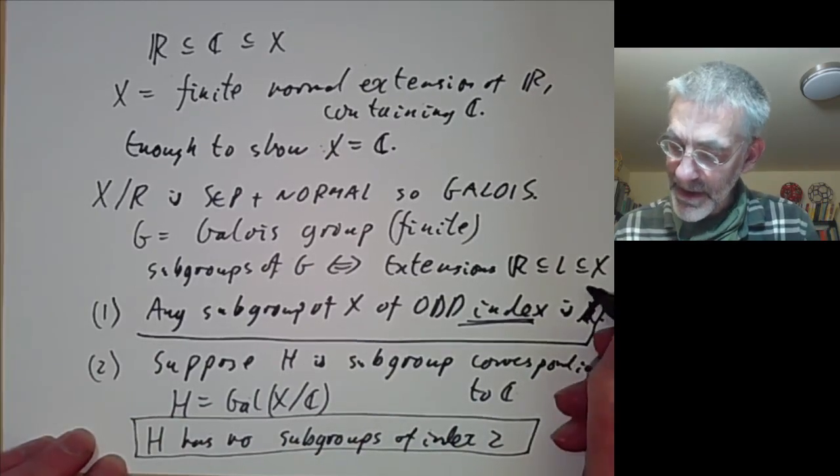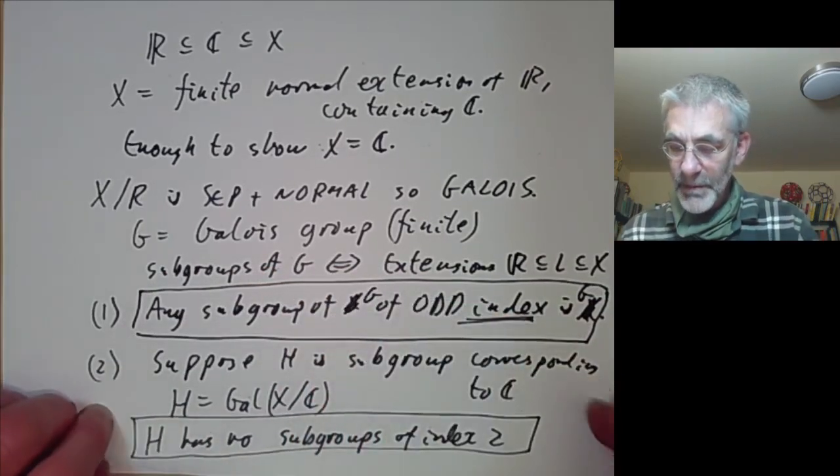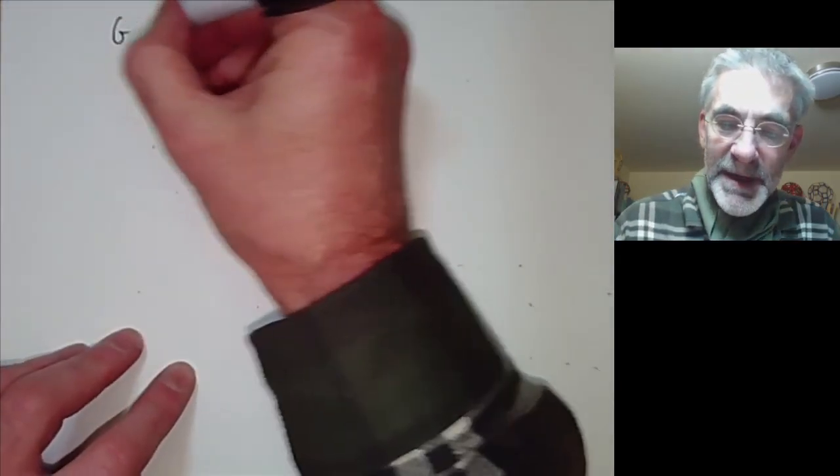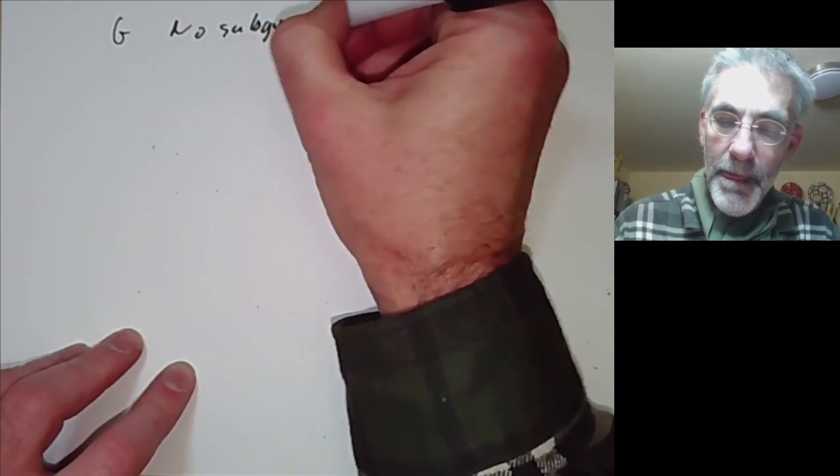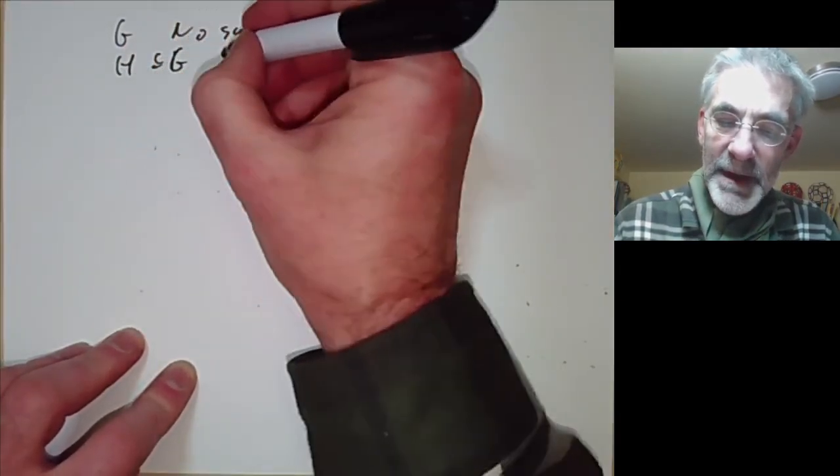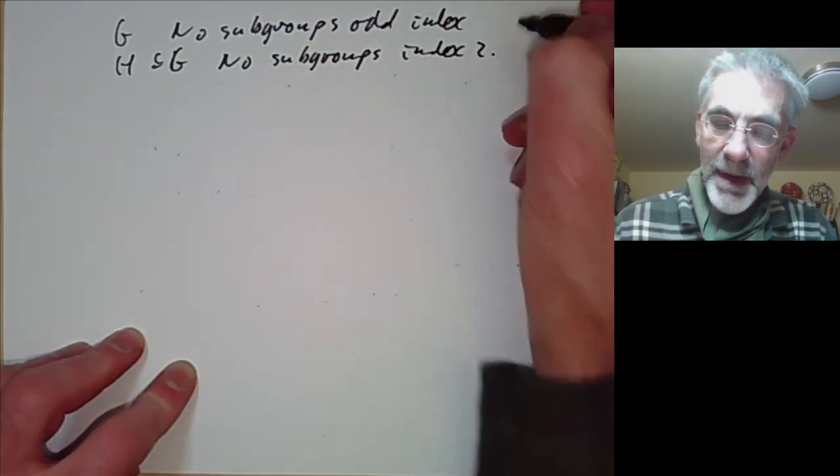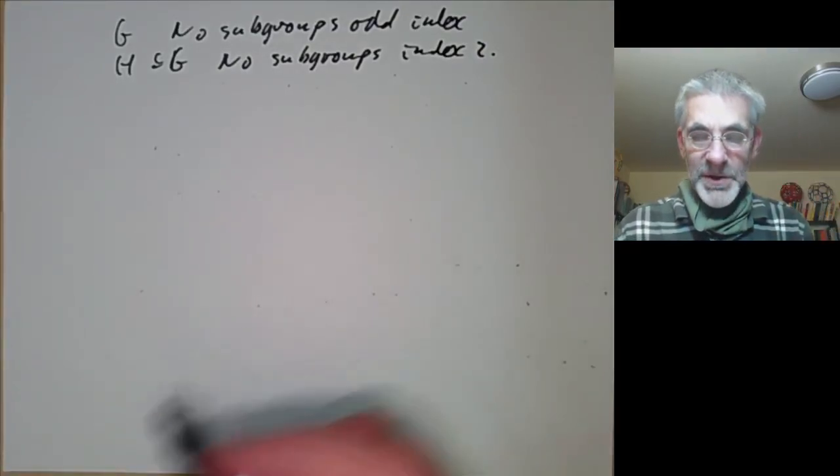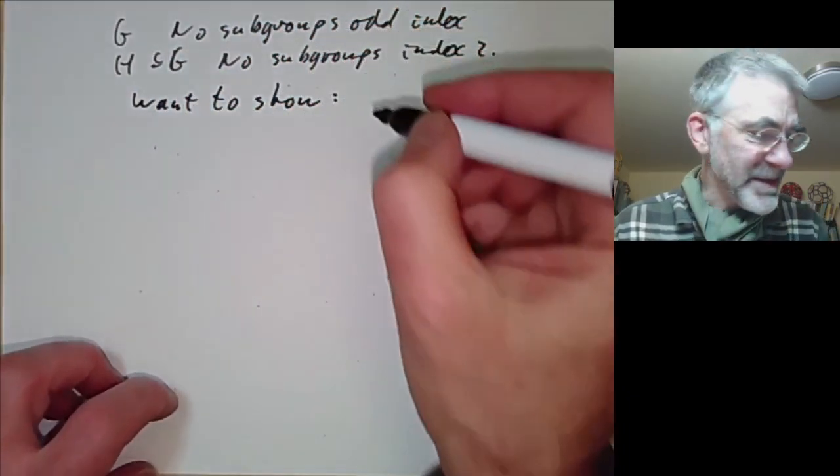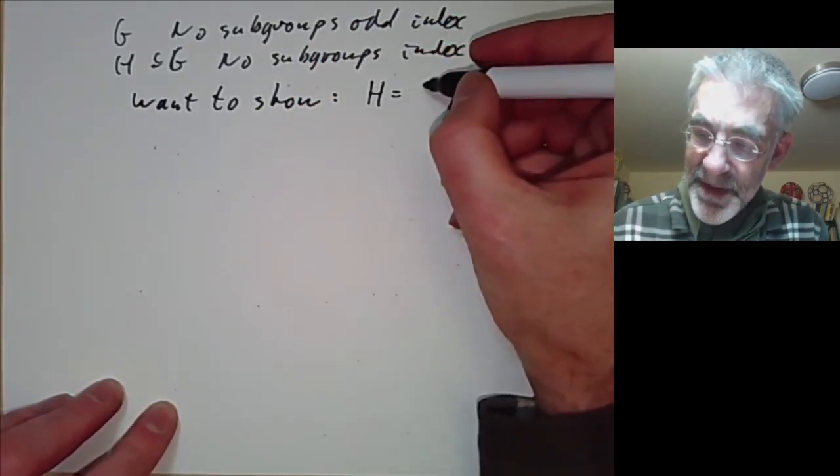When I say odd index in X, that should be G. So we've got two properties of a group. G has no subgroups of odd index and G has no subgroups of index 2. And what we want to do is to show that H is trivial.